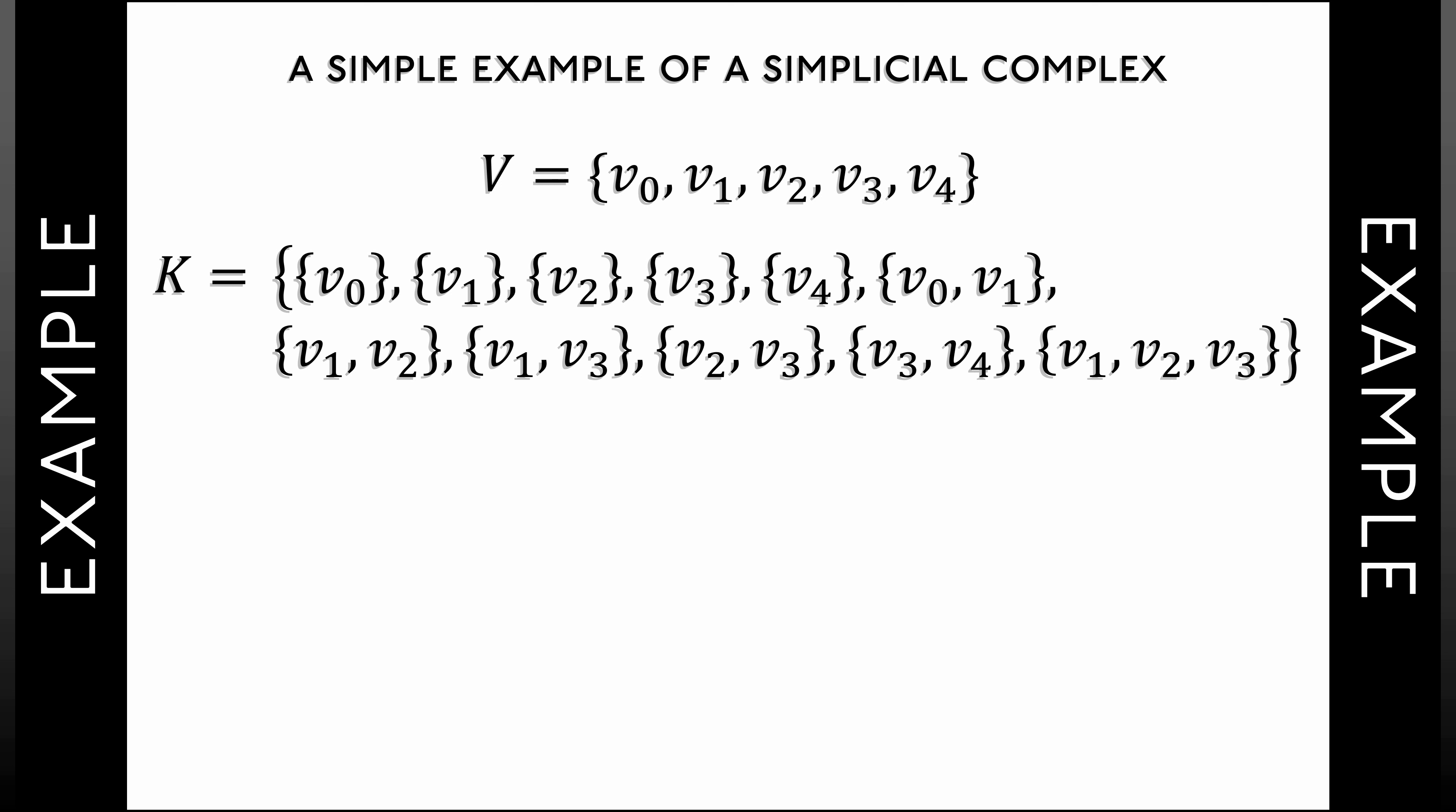Now, as it stands, this form of a simplicial complex is maybe not so intuitive to work with. We just have these lists of vertices. How do we make sense of this? How do we visualize this? One way to do so is fairly straightforward. We can draw each vertex as a dot, a point in the plane. When we have 1-simplices, that is, pairs of vertices, we can represent these as edges, much the way that one does with combinatorial graphs. Now it gets a little more interesting because we can represent that two-simplex V1, V2, V3 by a triangle.